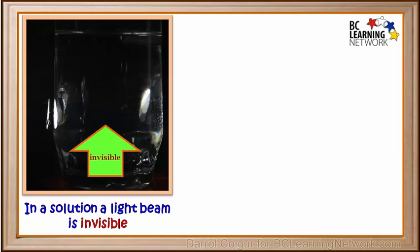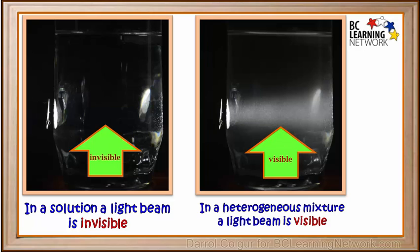So as a light beam passes through a solution, it is invisible. But if it shines through a heterogeneous mixture, it is visible. This is one way we can often use to tell if a liquid or gaseous mixture is a solution or a heterogeneous mixture.